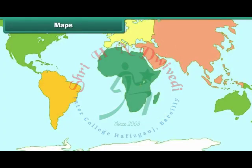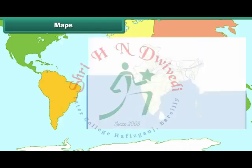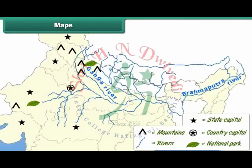A map represents some portion or all of Earth's surface diagrammatically. It shows countries of the world, their capitals, cities and towns. It also shows the various landforms and water bodies on Earth.